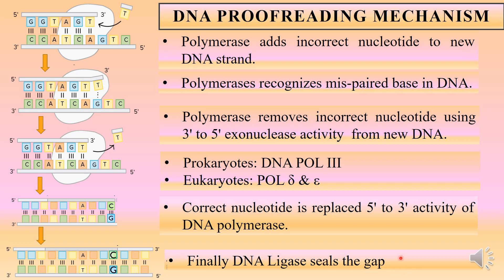This is how DNA proofreading occurs in a step-by-step fashion: first, recognizing the mispair; then removing it by 3' to 5' exonuclease activity; then replacing with the correct base by 5' to 3' activity; and finally sealing the gap by DNA ligase.